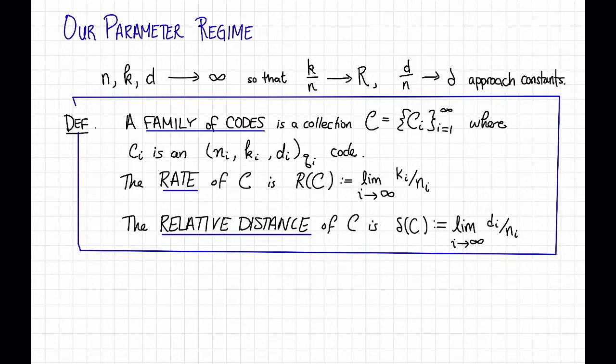With that in mind, here's a definition. A family of codes is a collection C of codes C1, C2, C3, and so on, where each Ci is an (ni, ki, di) sub-qi code. Remember, that means it has block length ni, message length ki, distance di, and alphabet size qi. Given such a family, we define the rate of the family to be R(C), which is equal to the limit as i goes to infinity of the rate of the i-th code, so ki divided by ni, assuming that limit exists. Similarly, we're going to define the relative distance of the family C as the limit of the relative distances of the code Ci.